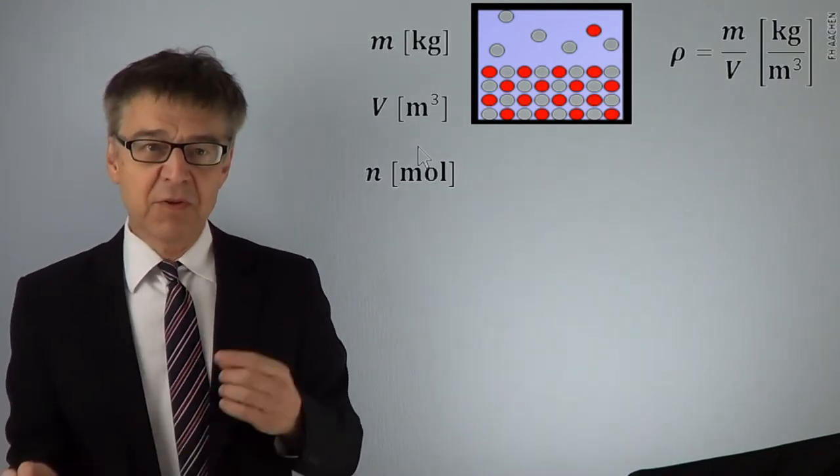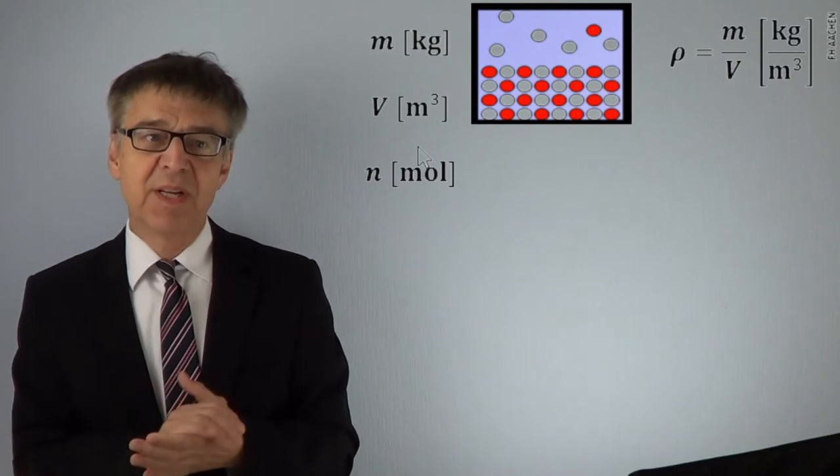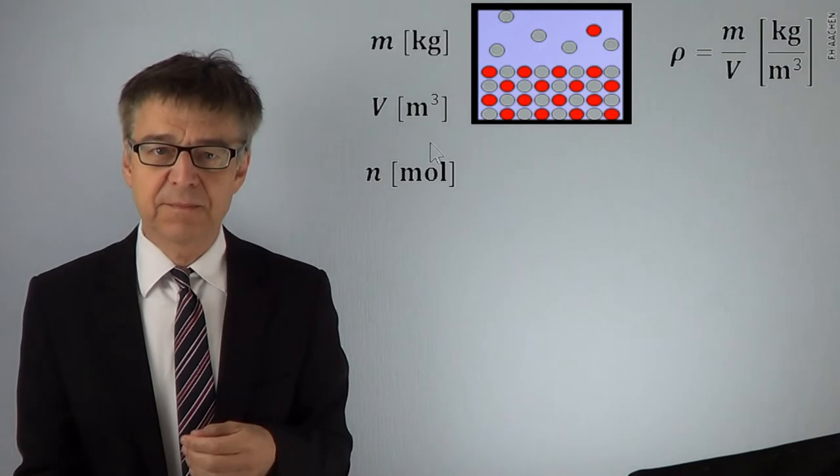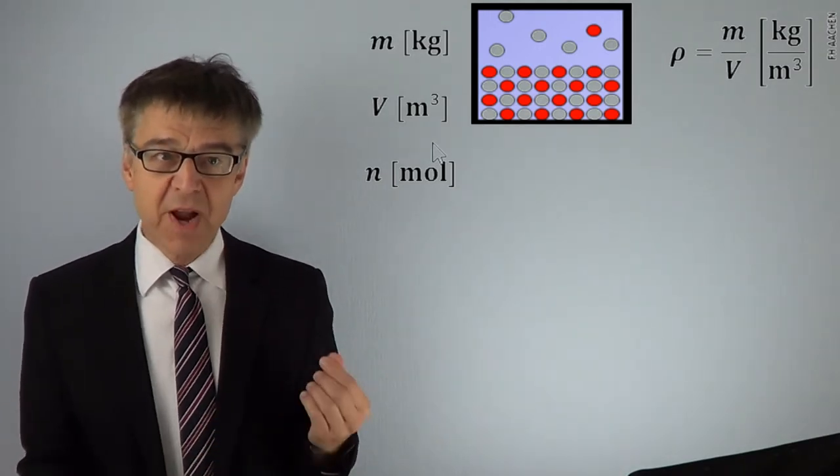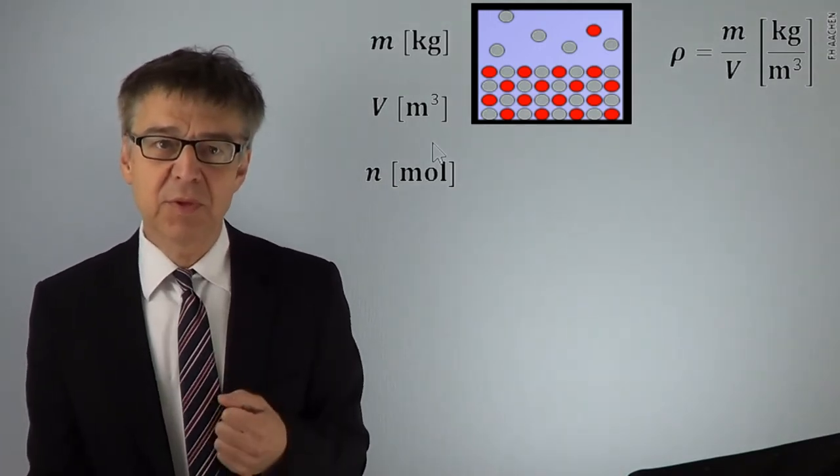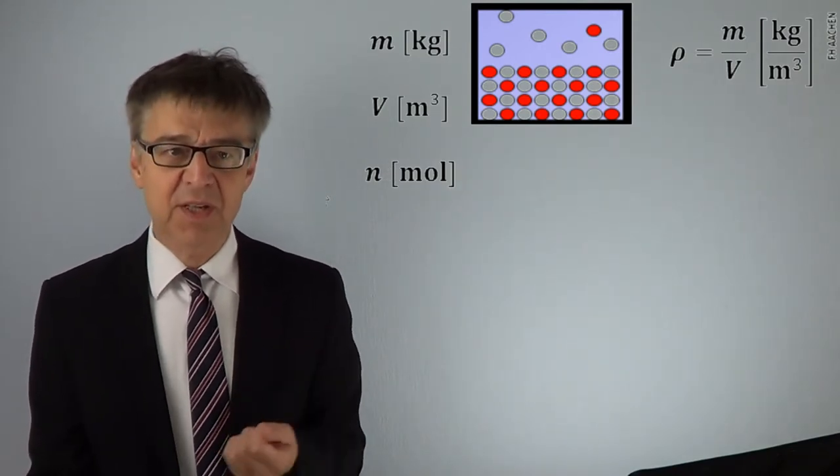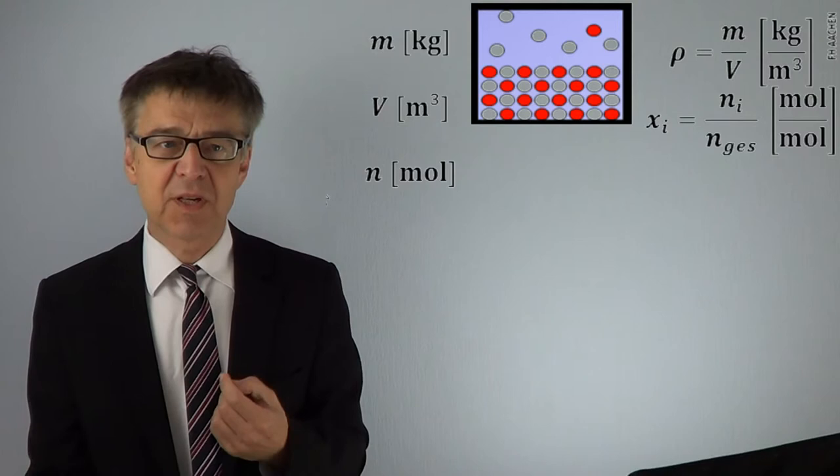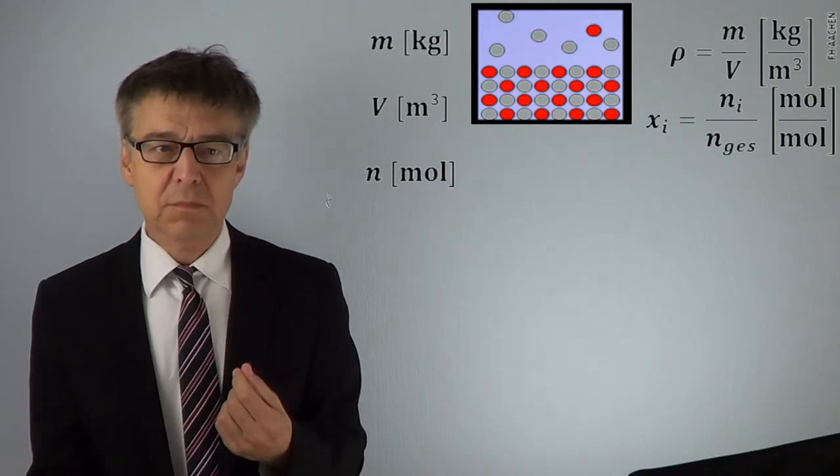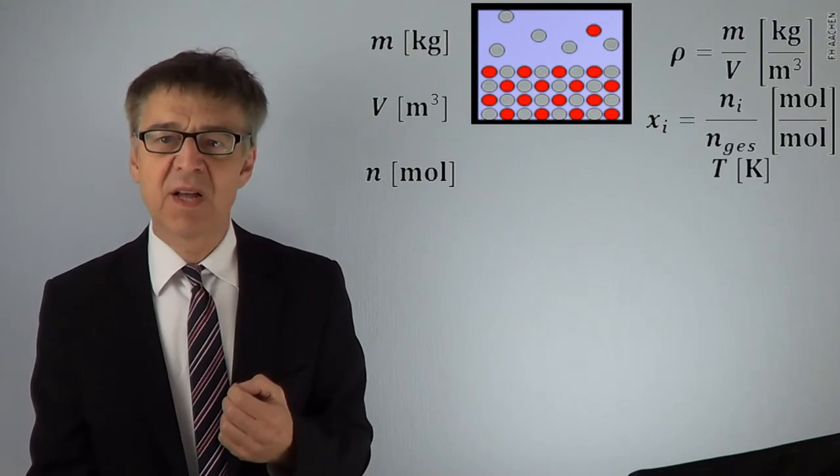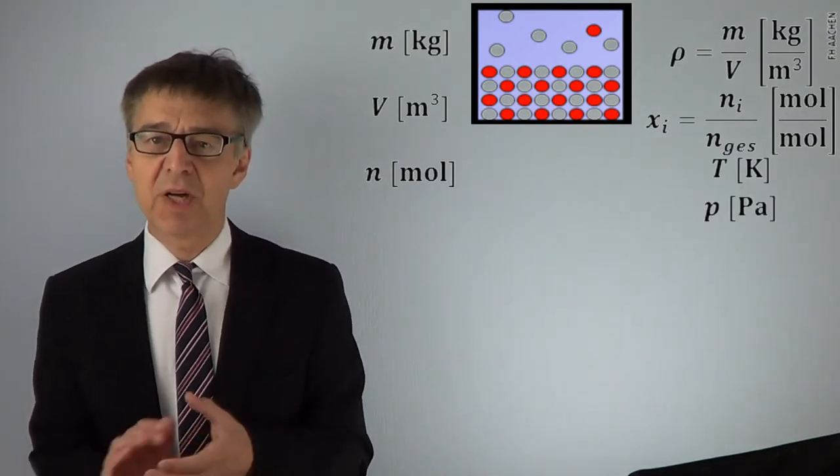The amount of a substance, very commonly used in chemistry, is an extensive state variable. The mole fraction, for multi-component systems, is an intensive state variable, a property indicating concentration. Further, very important intensive state variables are temperature and pressure.